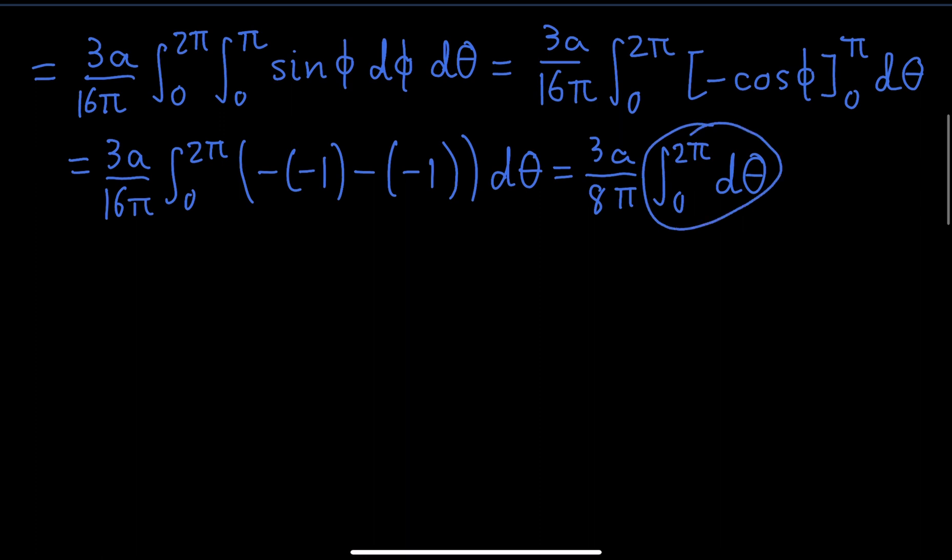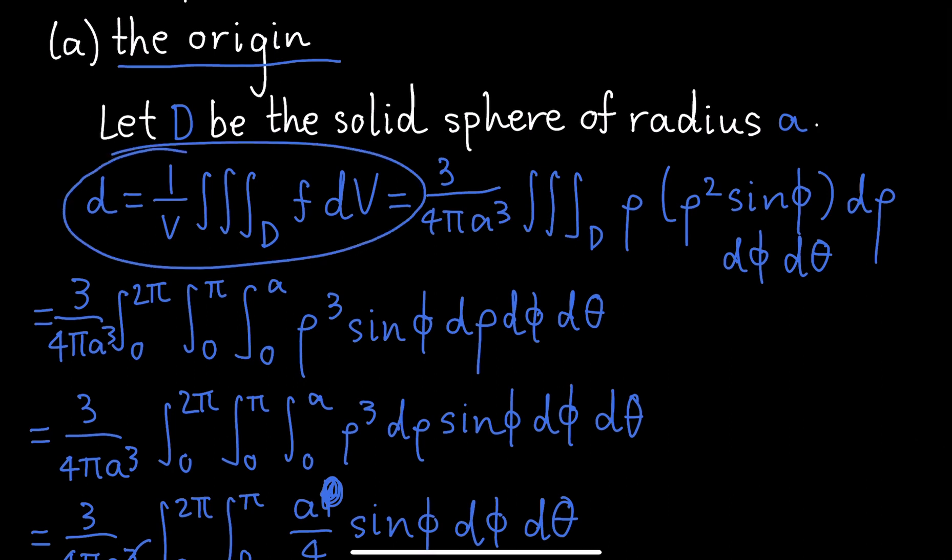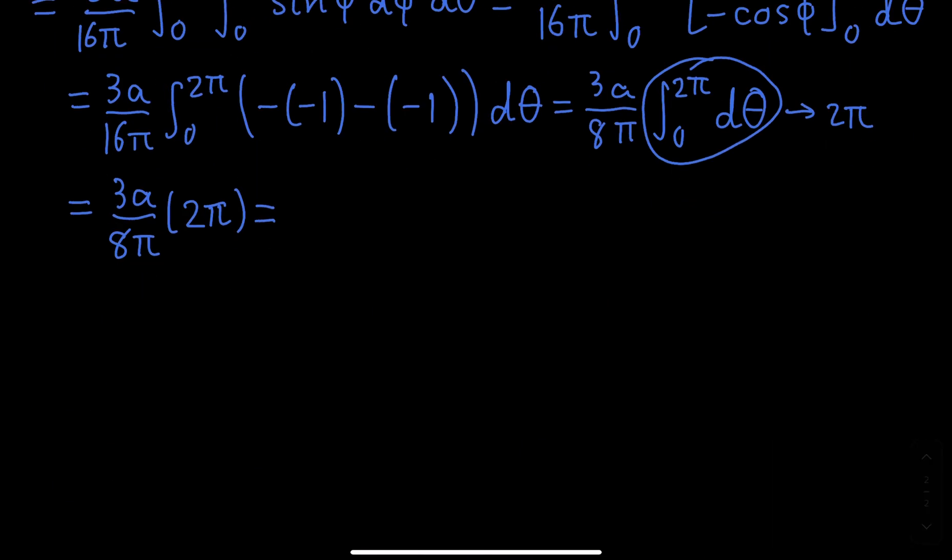And this basically evaluates to 2 pi. And thus we have 3a over 8 pi times 2 pi. This directly gives us that this whole integral we're trying to do, this average distance, using just like a similar method to how to calculate the mean of 3 numbers, we got that the pi's cancel out. This goes to 1, this goes to 4, and we have 3a over 4. So this is the average distance from a point in a solid sphere of radius a to the origin.